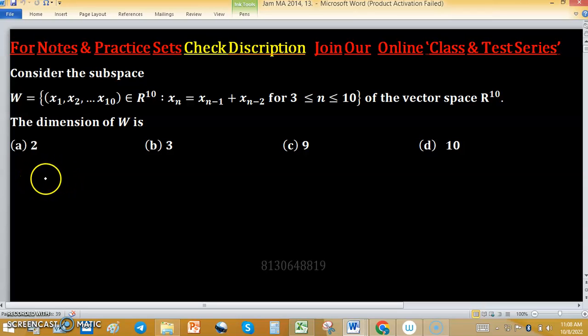The dimension of vector space R^10 is 10. How many independent conditions do we have?